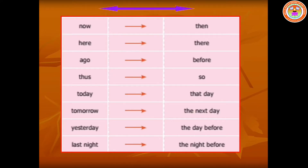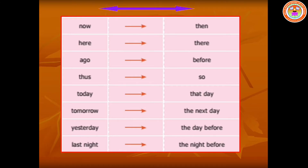Next, time and place changes: 'then' should be changed as 'now', 'there' should be changed as 'here', 'before' should be changed as 'ago', 'so' should be changed as 'this'. 'The day' should be changed as 'today', 'the next day' should be changed as 'tomorrow', 'the day before' or 'the previous day' should be changed as 'yesterday', and 'the night before' or 'the previous night' should be changed as 'last night'.